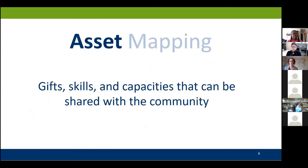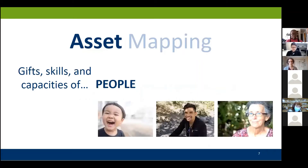We're going to break down the phrase 'asset mapping' into the two words. The simplest definition of an asset is this: gifts, skills, and capacities that can be shared with the community. There are various types of assets — I'm going to share five types. The first one is people: what do individuals in the community know, what do they know how to do, what is their institutional and historical knowledge, what are they excited about and interested in? These are at the heart of what makes a community.